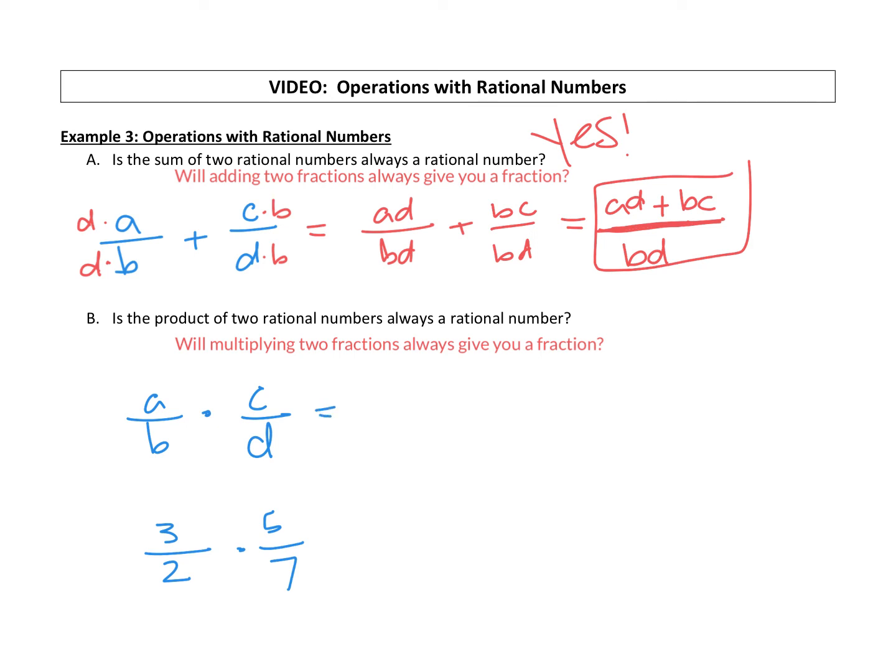So when you multiply those, you do not need a common denominator. You just multiply straight across. A times C is AC. B times D is BD. Nothing simplifies for that. So is this a fraction? Sure is. So is the product of two rational numbers always a rational number? Yes. So when you're adding rational numbers and you're multiplying rational numbers, you will get a rational number for your answer.